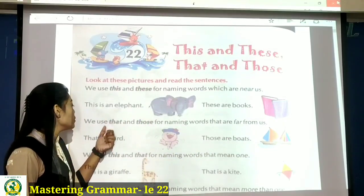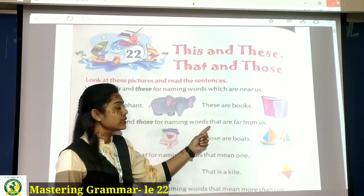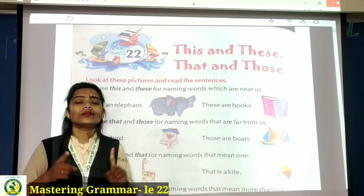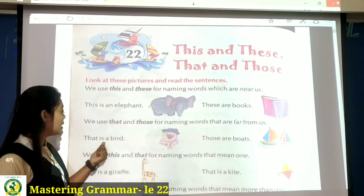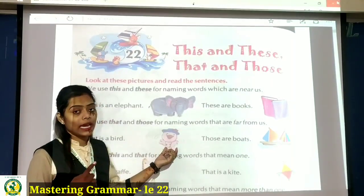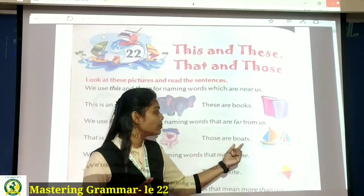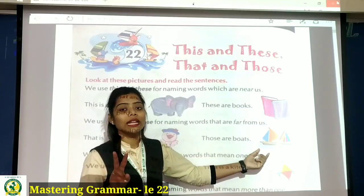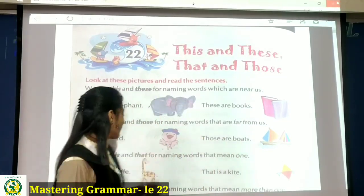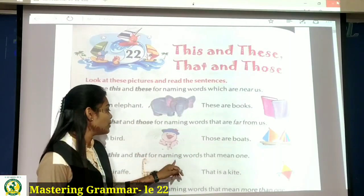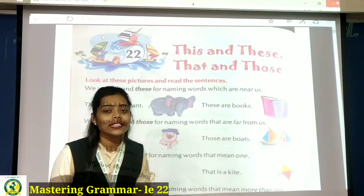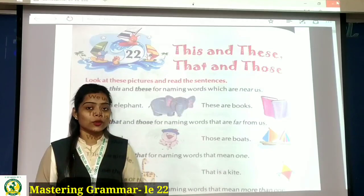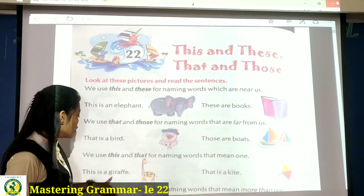Next, we use that and those for naming words that are far from us. Jab ham things ya people ki baat karei joh hamse door hai, toh ham that and those ka use karte hai. First is: That is a bird. Yeh bird single hai, singular form mein hai. So, that is a bird. And those are boats — boats are far from us but more than one, matlab plural hai. Isi liye those are boats.